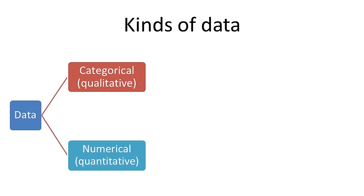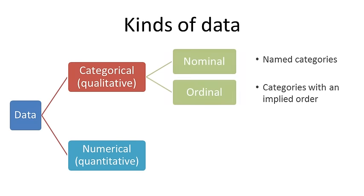We can divide each of these kinds of data another step. Let's start with categorical data. Nominal data is data where the categories are just named. Nominal means names.